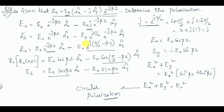So whatever equation is given, check whether it is in electric field intensity form. If magnitudes are equal, it may be linear or circular polarization. If there is also a phase shift of 90 degrees — as we saw with cos(βz) and sin(βz) here — then it is circular polarization. If magnitudes are not equal but the phase difference is 90 degrees, then it is elliptical polarization. Any other angle gives linear polarization.